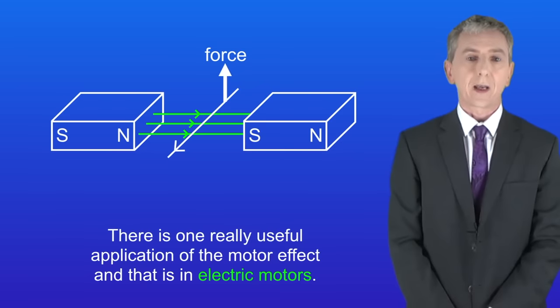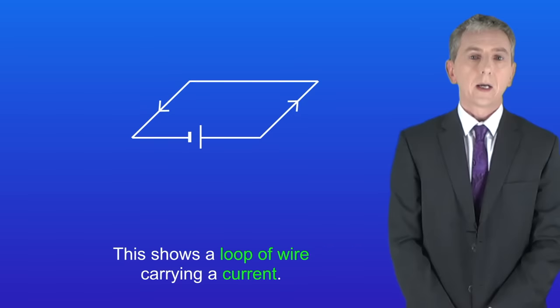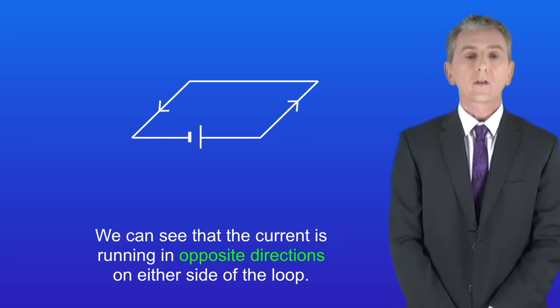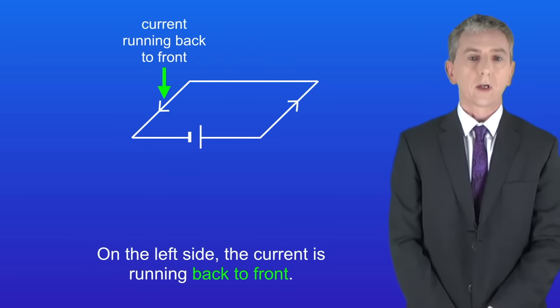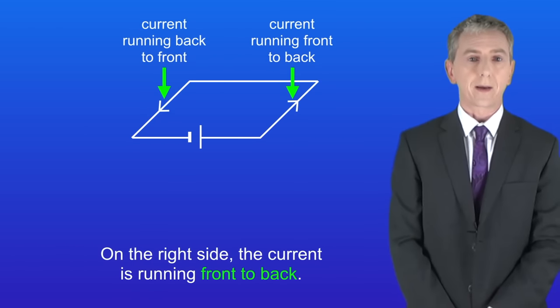Now there is one really useful application of the motor effect, and that is in electric motors. I'm showing you here a loop of wire carrying a current, and we can see that the current is running in opposite directions on either side of the loop. On the left hand side the current's running back to front, but on the right hand side the current's running front to back.